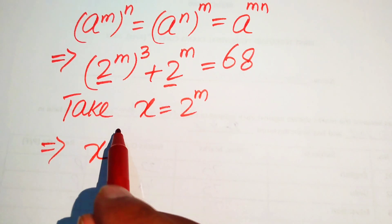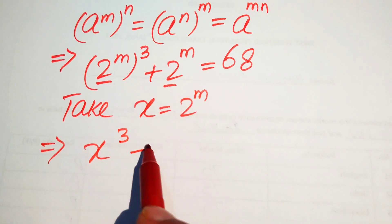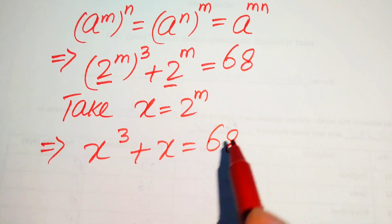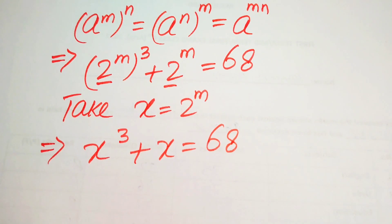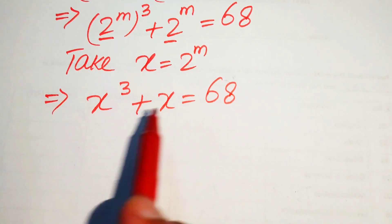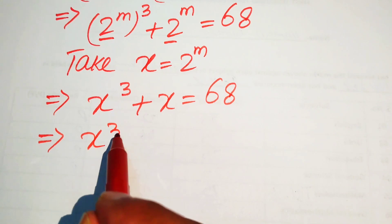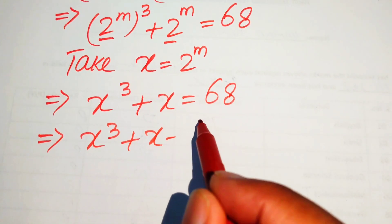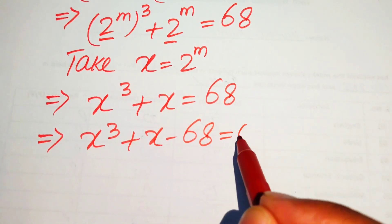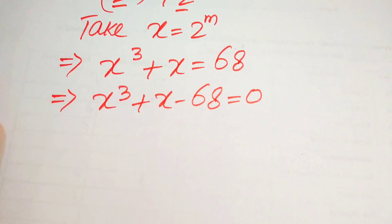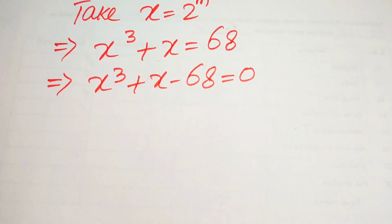When we take x equals 2 to the power of m, our equation becomes x cubed plus x equals 68. Moving 68 to the left-hand side gives us x cubed plus x minus 68 equals 0. Now we break the 68 and solve this cubic equation.